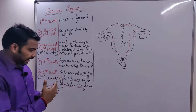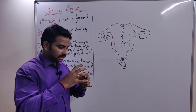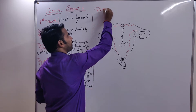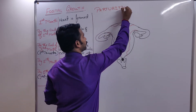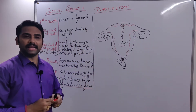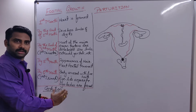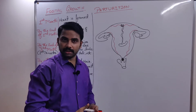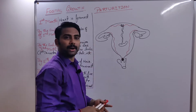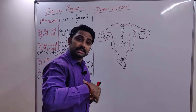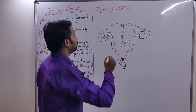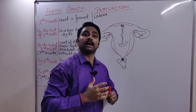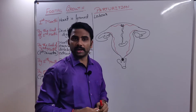When nine months are over and the fetus completes its entire growth, it is ready for the process called parturition. The process of delivery or expulsion of the fetus is called parturition. During delivery, a series of events occur, and those events together are called labor. The changes that occur during delivery are called labor, and they cause severe pain — called labor pain.